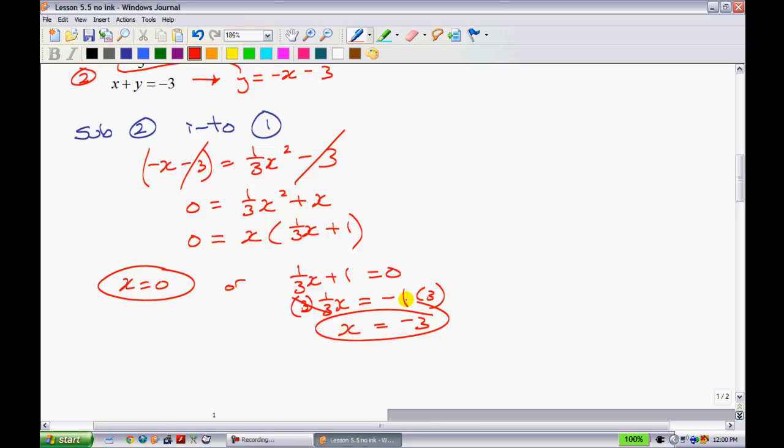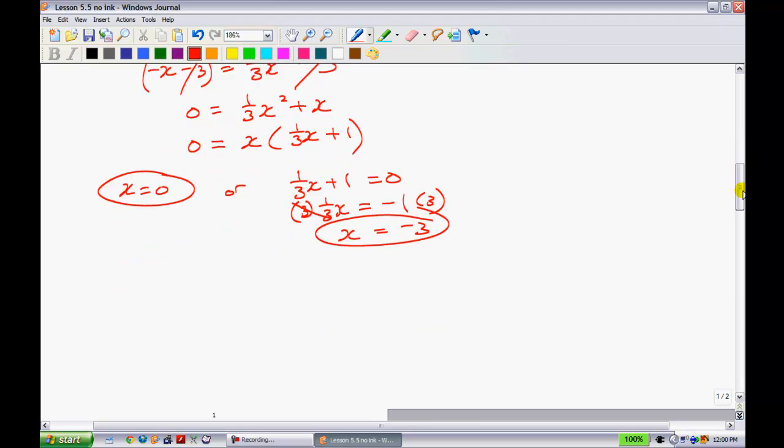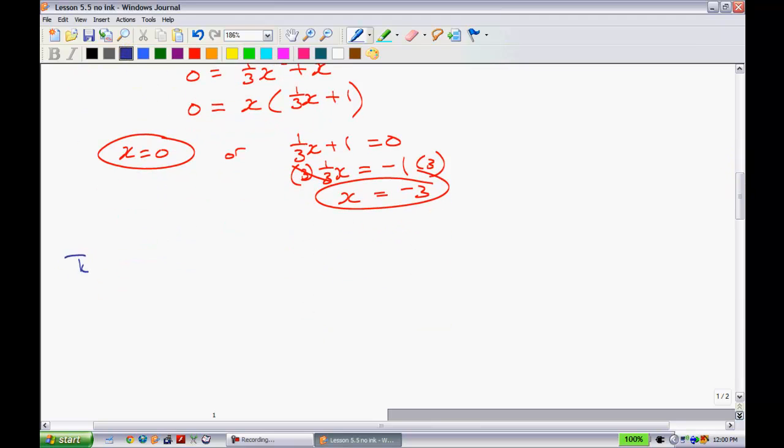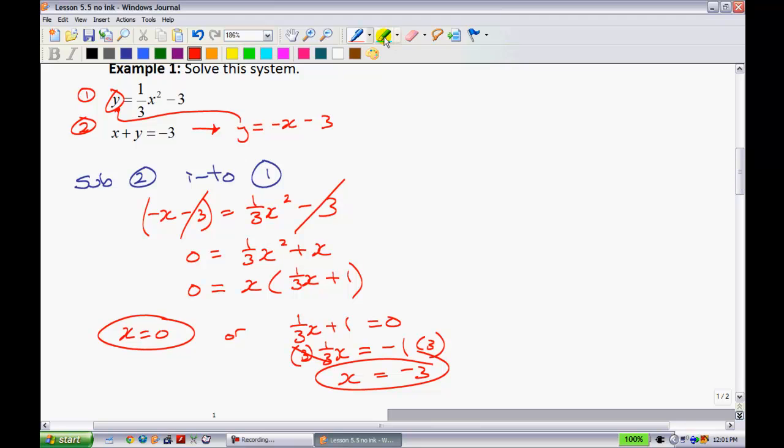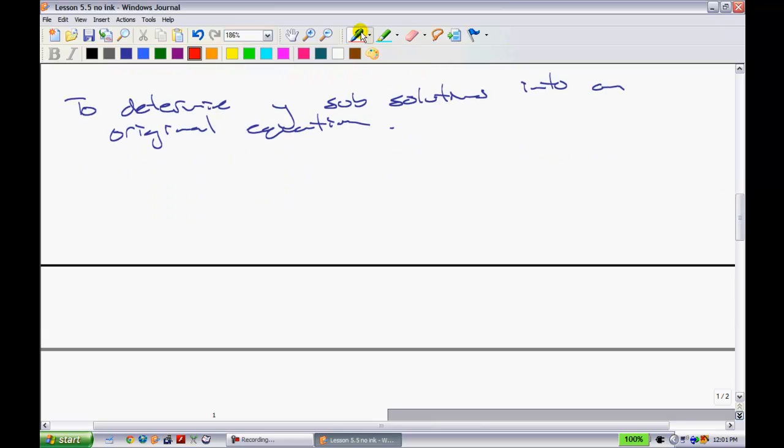So those are our two x coordinates of the graph. We need to now find out what the possible y-coordinates could be. To determine y, sub solutions into an original equation. When you substitute it into the original equation, you can use whichever one you like. For this one, there's quite obviously one that's easier, and that's the one that has x plus y equals negative 3. So I have x plus y equals negative 3.